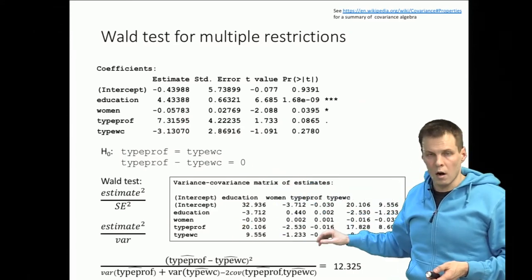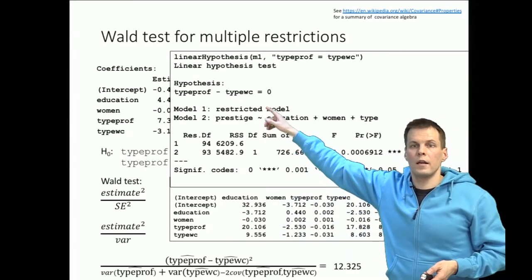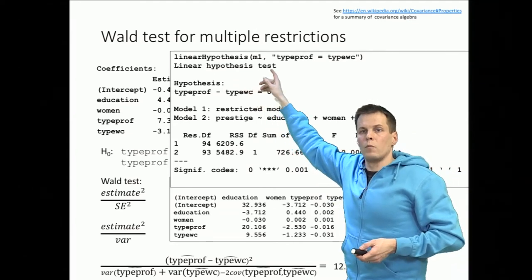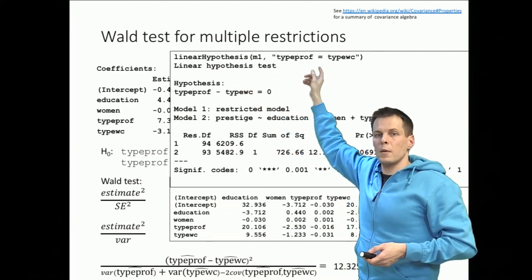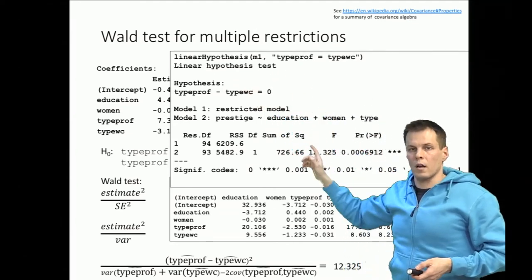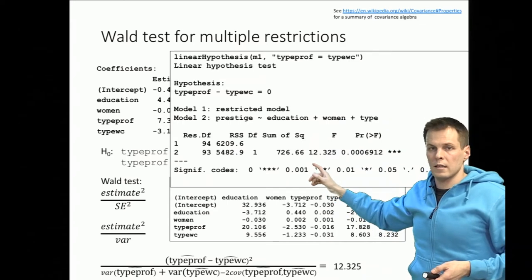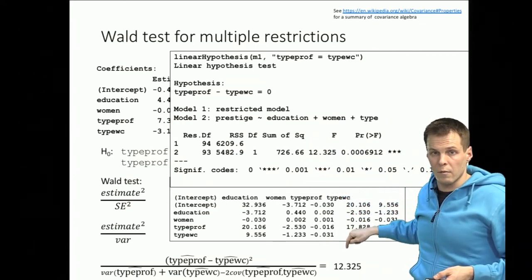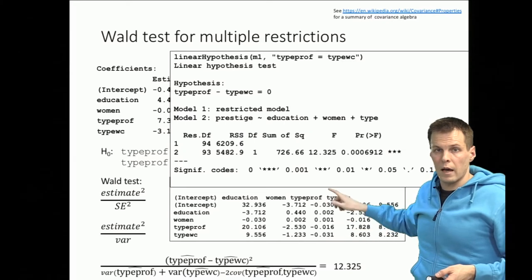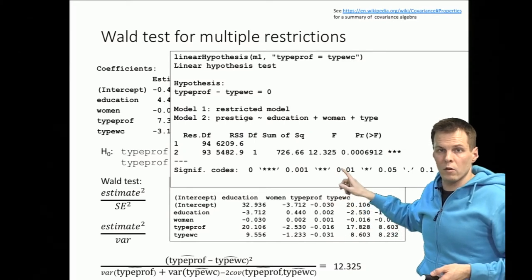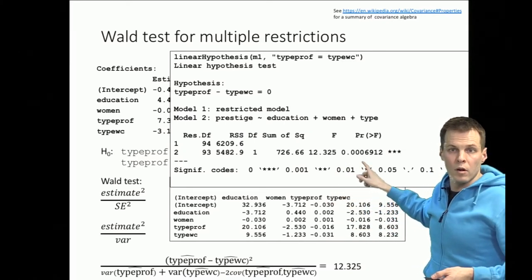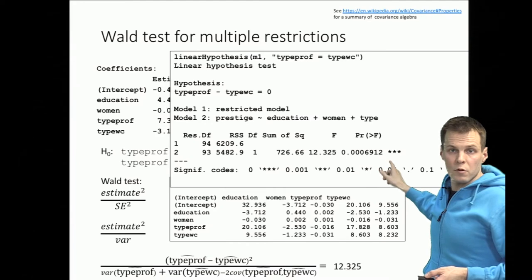In R we can simply use the `linearHypothesis` function and specify the hypothesis. R will calculate the test statistic — 12.325, the same value we got manually — and give you the proper p-value against the appropriate F-distribution.